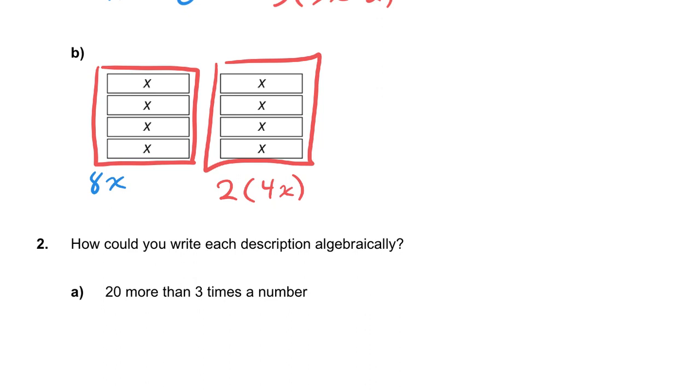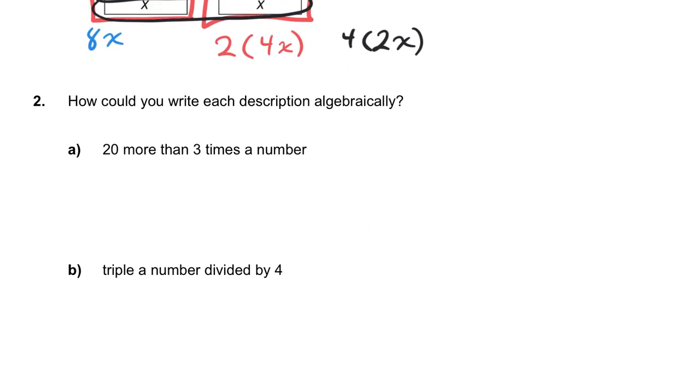You could also see it as four groups of 2x's, if you saw it more like this, right? Here's 2x's, and then another 2x's, another 2x's, and another 2x's, right? So, four groups of 2, two groups of 4. Different ways of saying the same thing again.